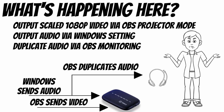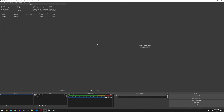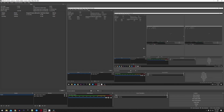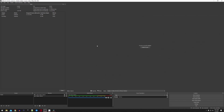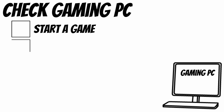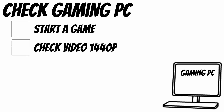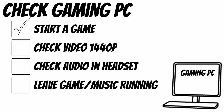Don't worry if you didn't quite follow that explanation — as long as you set all the settings correctly, everything should still work. On the gaming PC there's just one more thing left in OBS Studio: right-click on the main preview and deselect Enable Preview. You don't strictly have to do this, but it's a performance hack to minimize the impact OBS has on your gaming system. Finally, verify audio and video are working properly by launching your game — it should show up in 1440p at whatever refresh rate your monitor supports, and game audio should come through your preferred audio device that you set up to monitor in OBS. Leave the game running or play some music so there's audio coming through your headset.